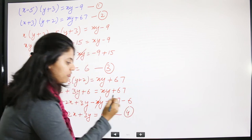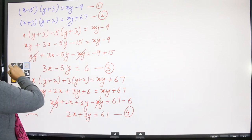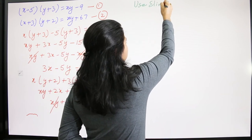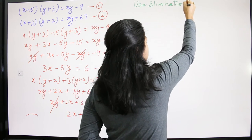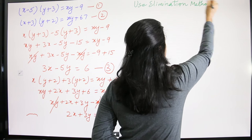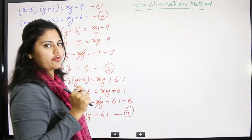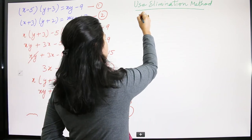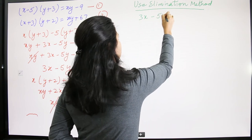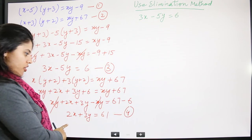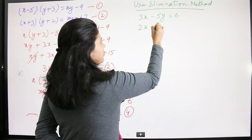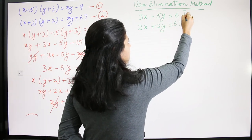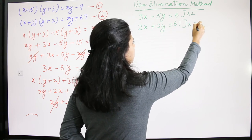Now it's time to solve using any algebraic method. We will use the elimination method. We have Equation 3: 3x − 5y = 6, and Equation 4: 2x + 3y = 61.